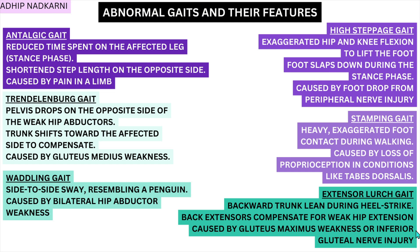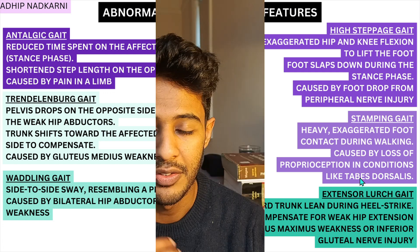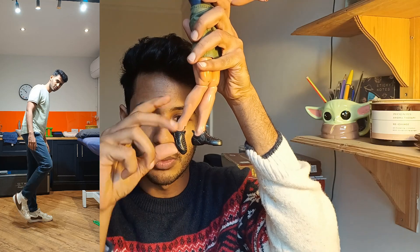Next is high steppage gait. Here we see exaggerated hip and knee flexion to lift the foot up. This usually happens because the person has a foot drop from peripheral nerve injury, though central nervous system problems can also cause it. Because the person is unable to create dorsiflexion, the functional leg length is longer, so they create exaggerated hip and knee flexion to clear the foot off the ground. Structural causes are also possible.